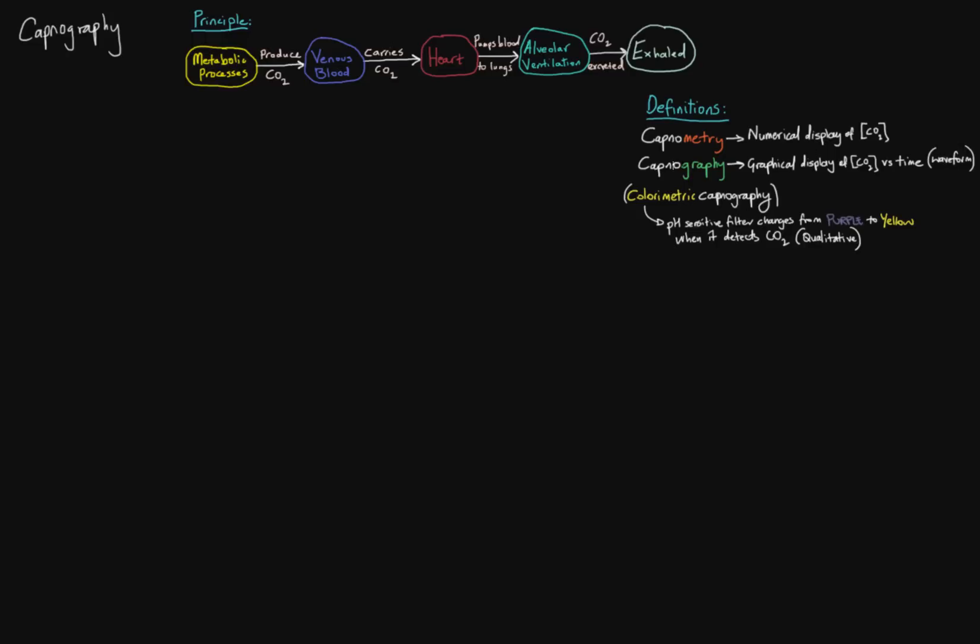And then one of the other things that you'll see is colorimetric capnography, or sometimes called colorimetric CO2 detectors. And these are commonly used in an ICU, in critical care, and in the emergency room, just to simply detect a yes or no, is CO2 present? And those look like this. Some of you may have seen those.